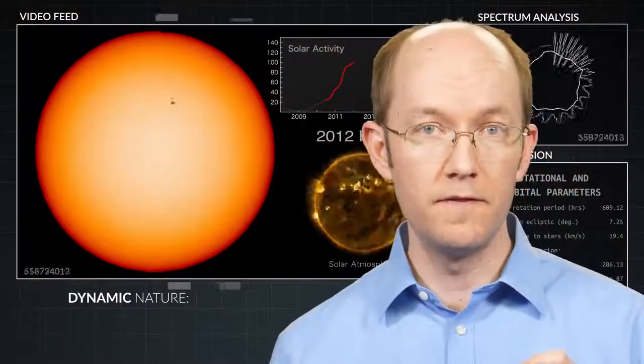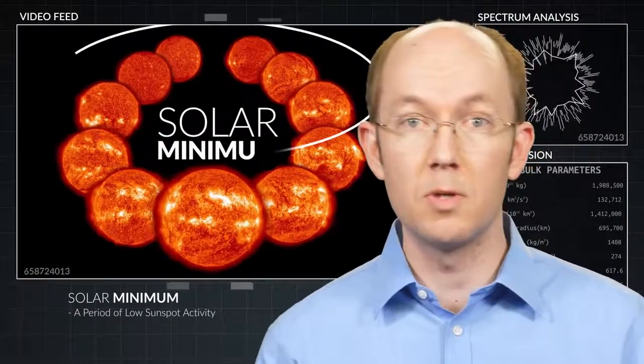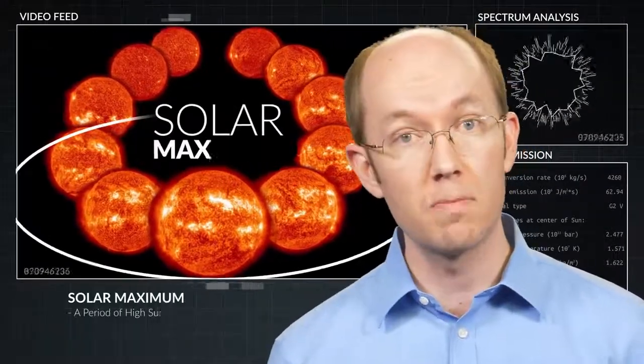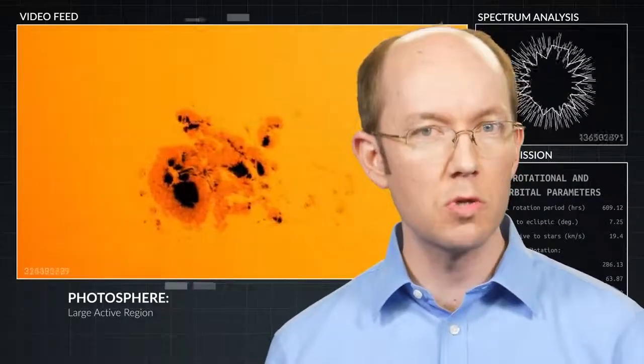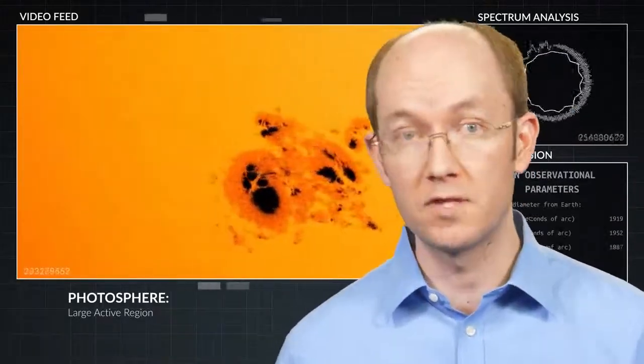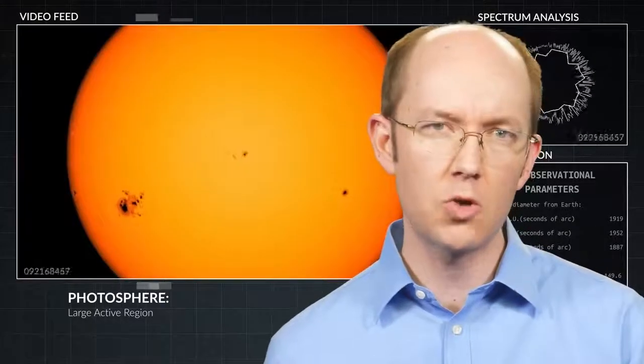The number of visible sunspots fluctuates through a solar cycle. And this cycle follows an 11-year oscillation from a period of low activity, called a solar minimum, through a period of high activity, called a solar maximum, and then back to the minimum. During a solar maximum, there can be hundreds of sunspots. And sunspots are often the precursors to a variety of other active features.